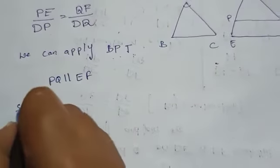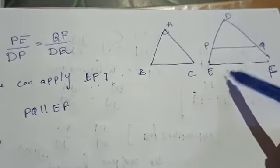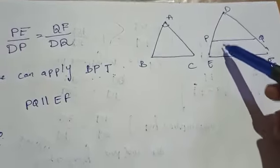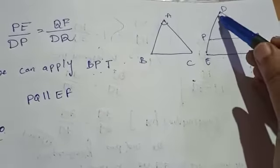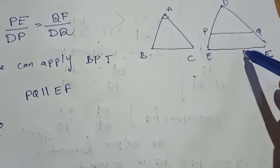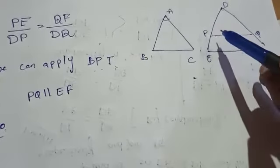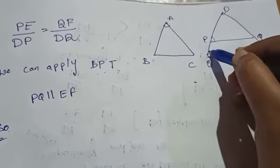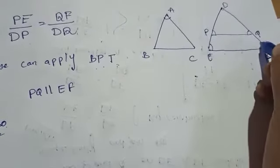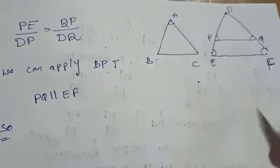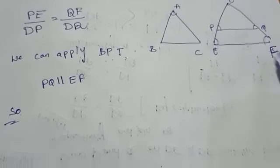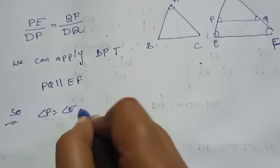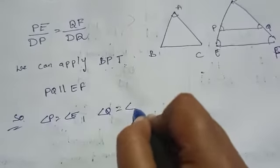Since PQ is parallel to EF and DE is a transversal line cutting the two parallel lines PQ and EF, the corresponding angles are equal. Therefore, angle P equals angle E and angle Q equals angle F.